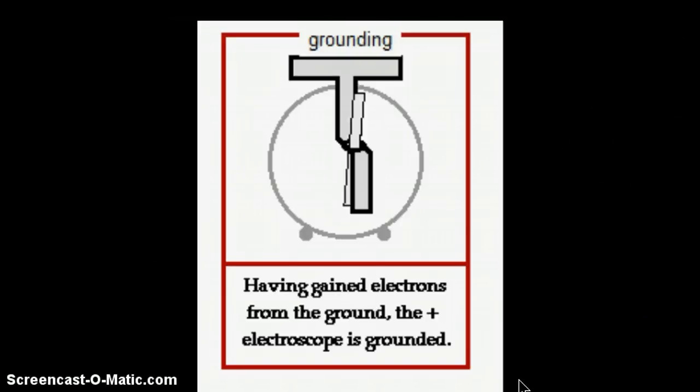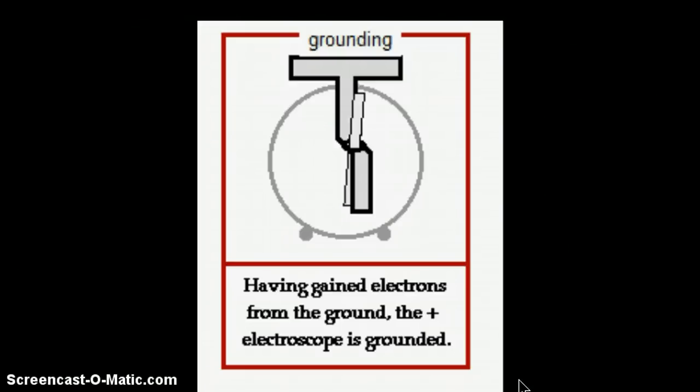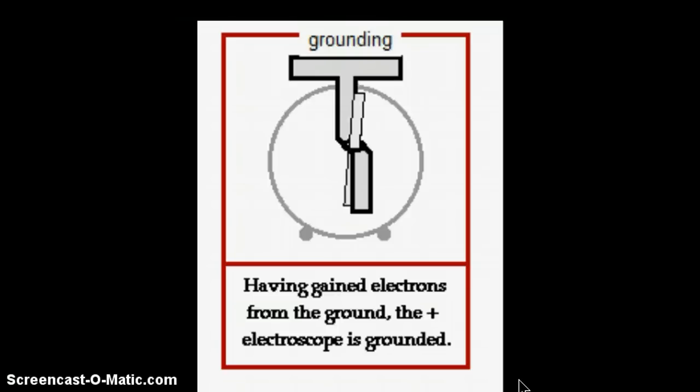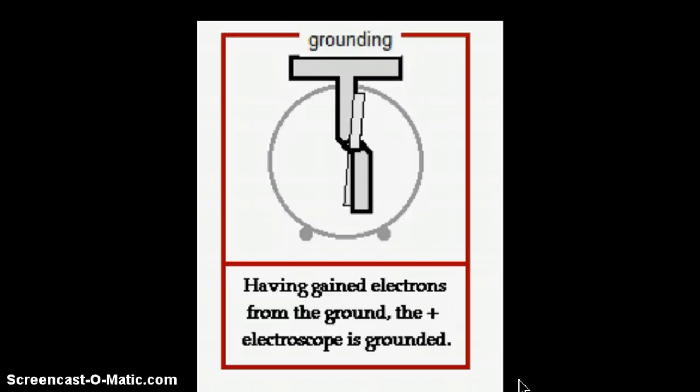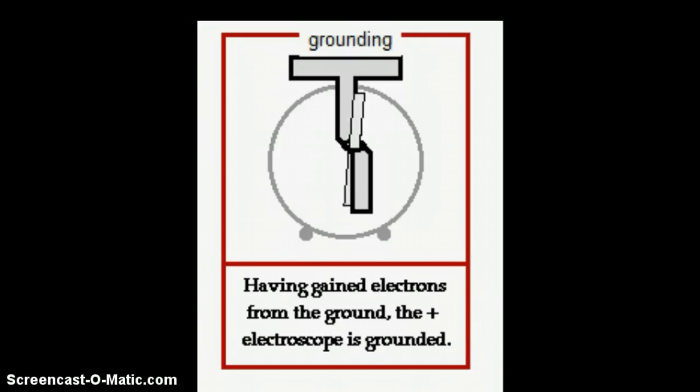So when you ground something, you will touch it with some kind of conductor. That conductor will bring electrons either in from the ground or will allow electrons to travel to the ground. That will allow a balance to be reset, and that will neutralize the electrical charge of the device.